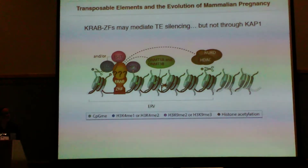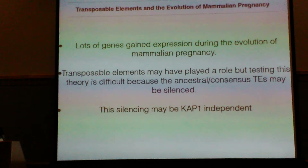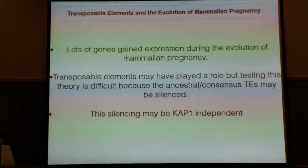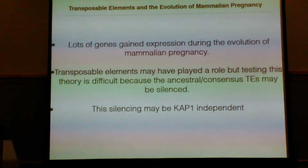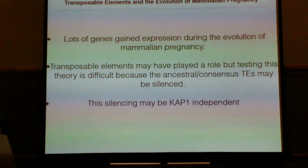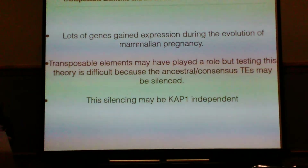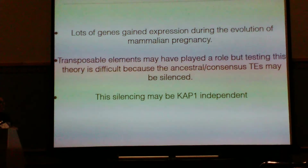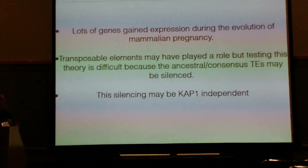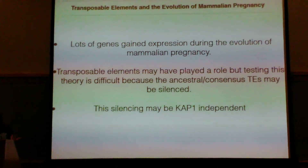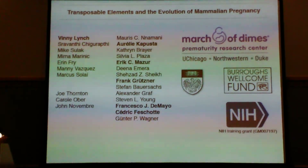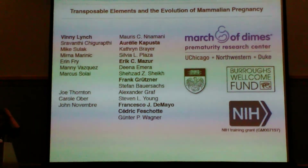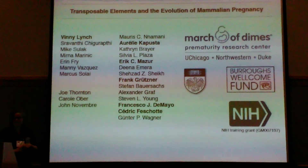In summary: lots of genes have gained expression during the evolution of mammalian pregnancy; transposable elements may have played a role, but testing them is difficult because the ancestral consensus TEs might be silenced; and the silencing seems to be KAP1 independent, which may conflict with current thinking about how TEs are regulated. I'll thank my lab, all of our advisors, and my funding sources, and I'm happy to take any questions.